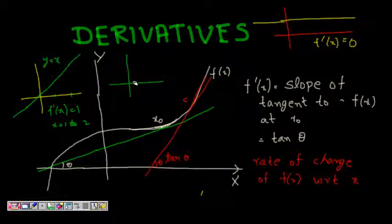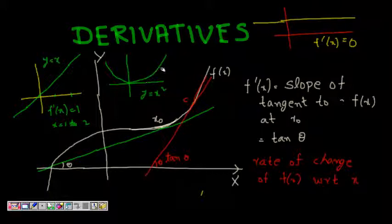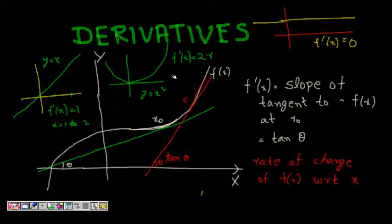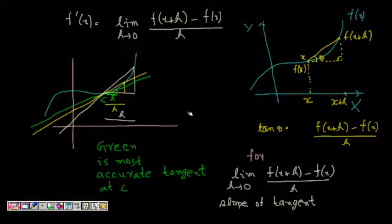But for a function like y = x², it is changing differently — the value is increasing quite fast as x grows. We will see that f'(x) for this is 2x, which means the rate of change is dependent on x as well. As x increases, this function increases faster. This is the importance of the derivative, and we will now express this concept in terms of limits.